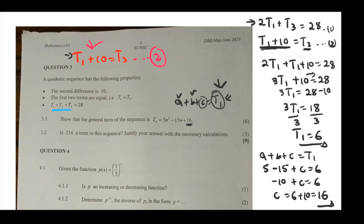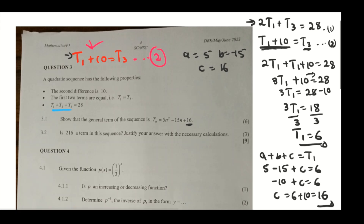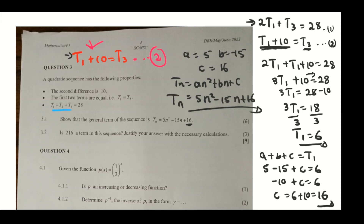So our values are: a = 5, b = −15, and c = 16. The general term is Tn = 5n² − 15n + 16. I hope you understood. If you didn't, please let me know in the comment section below. I'm going to continue with 3.2 in another video.